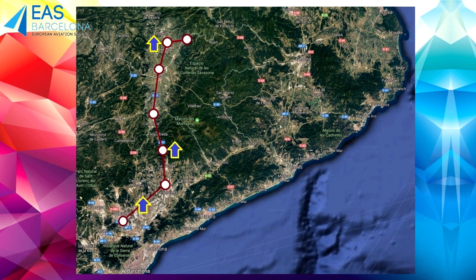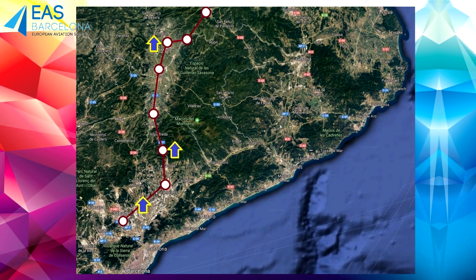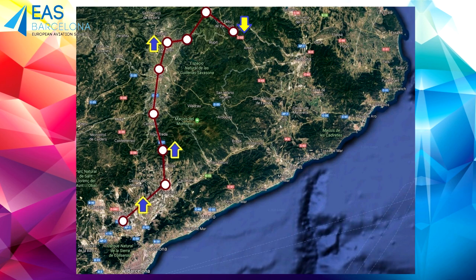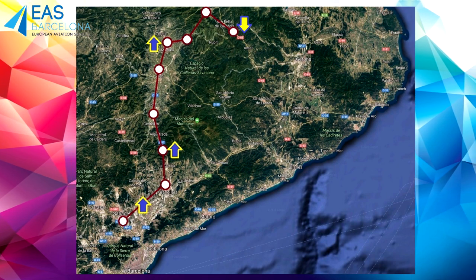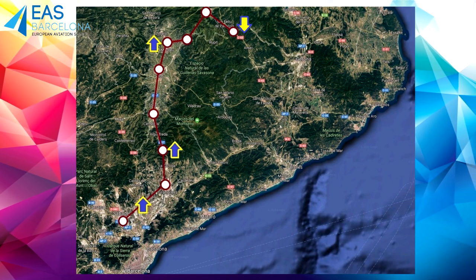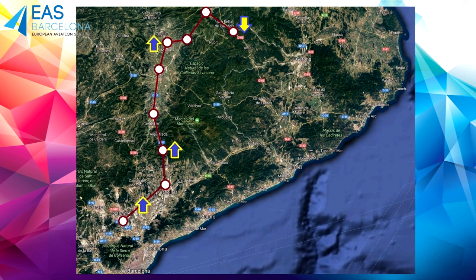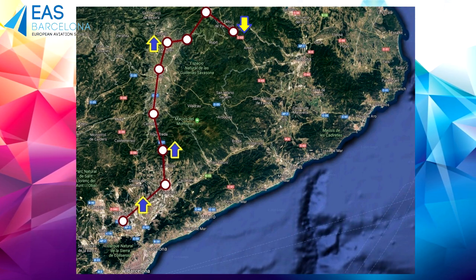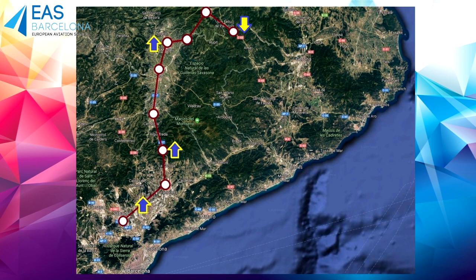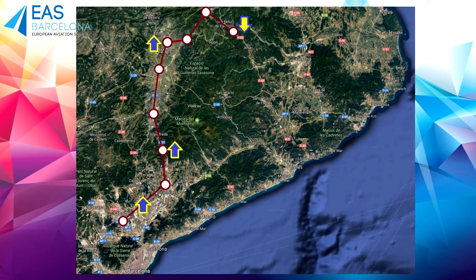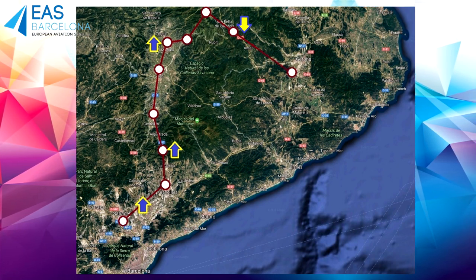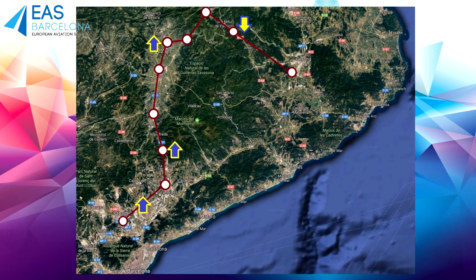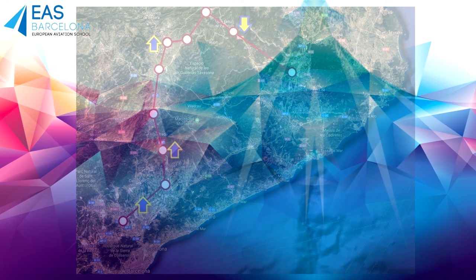Continuing the route: Santa Maria de Corcó, Sant Esteve d'en Bas. At this point we will start the approach to Girona Airport via the whisky point at Les Planes d'Hostoles. Five minutes before reaching the last point we will communicate our intentions to Girona Control Tower, and finally we will land at Girona Airport (LEGE).